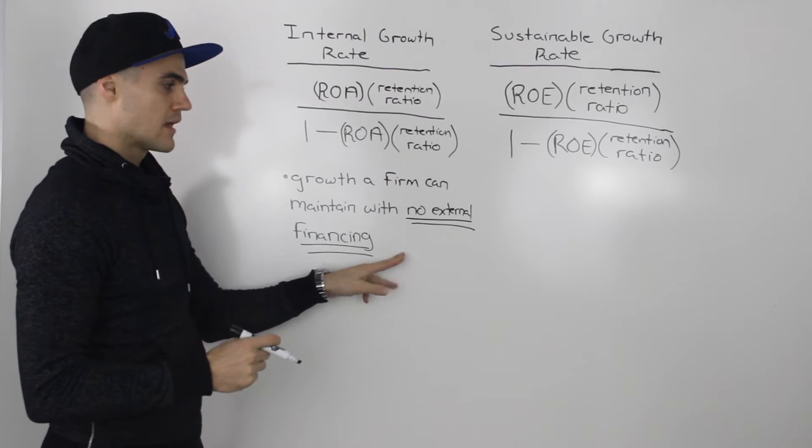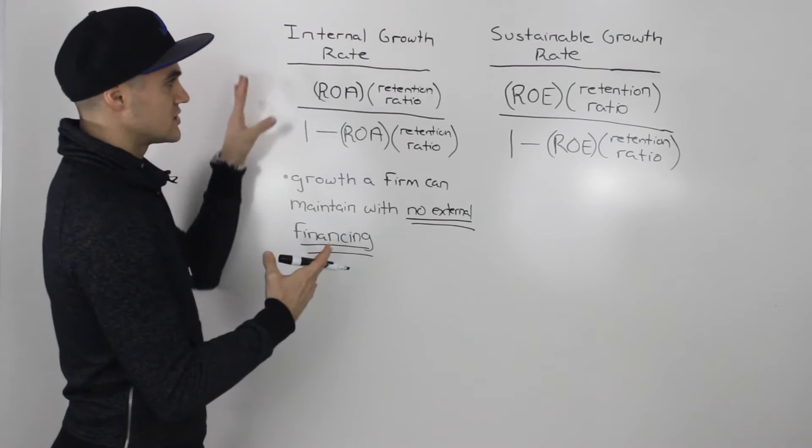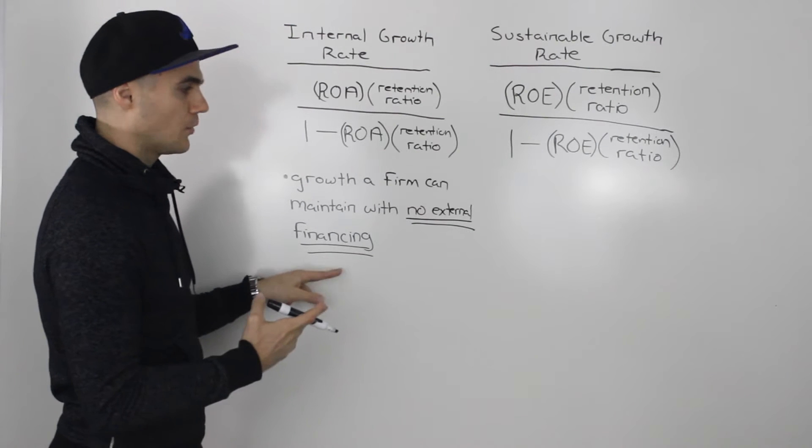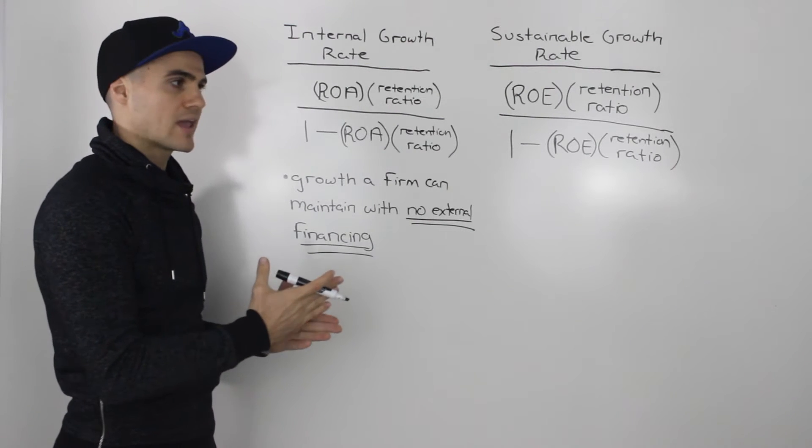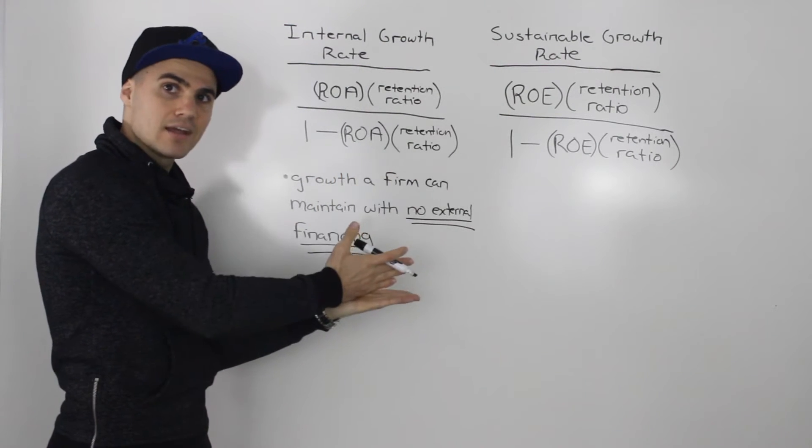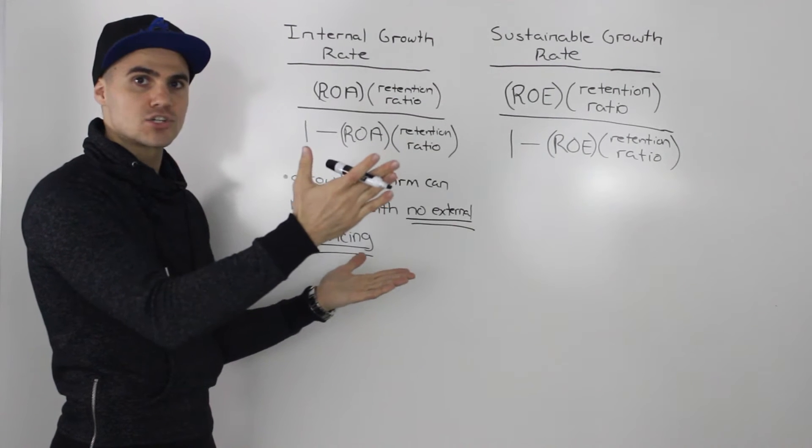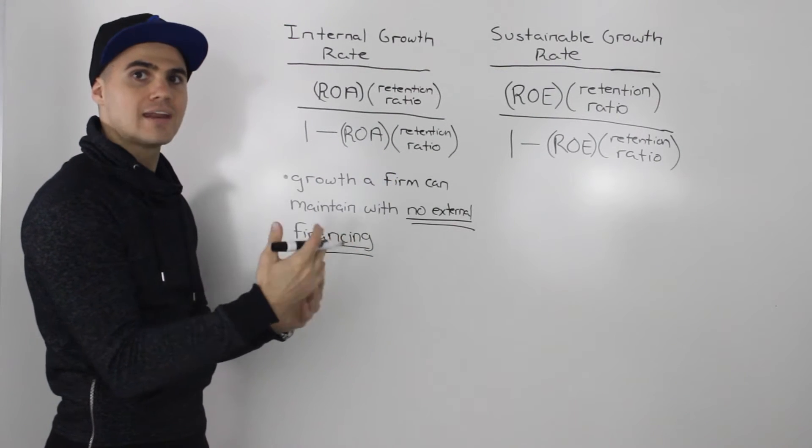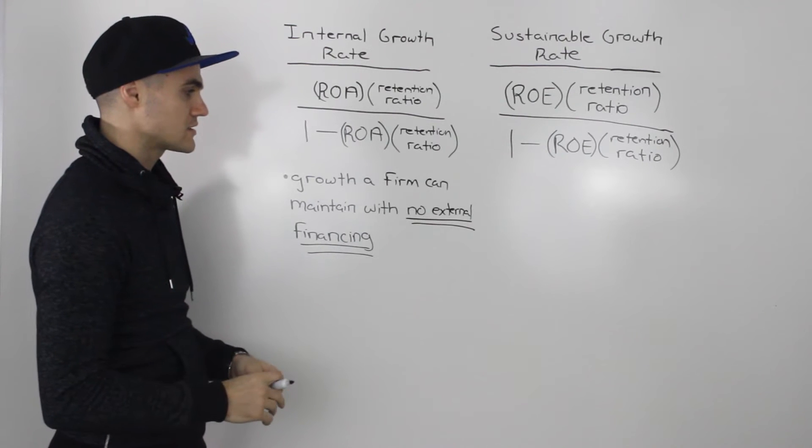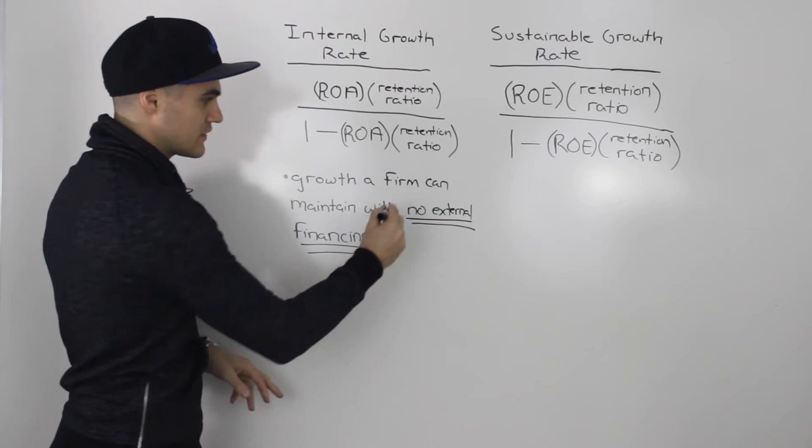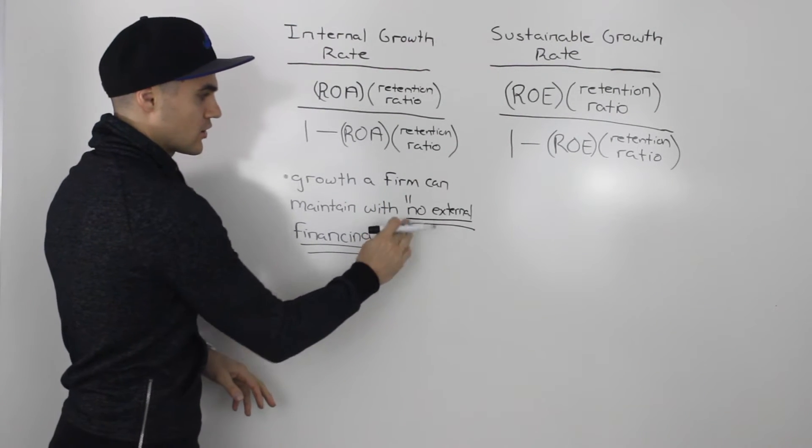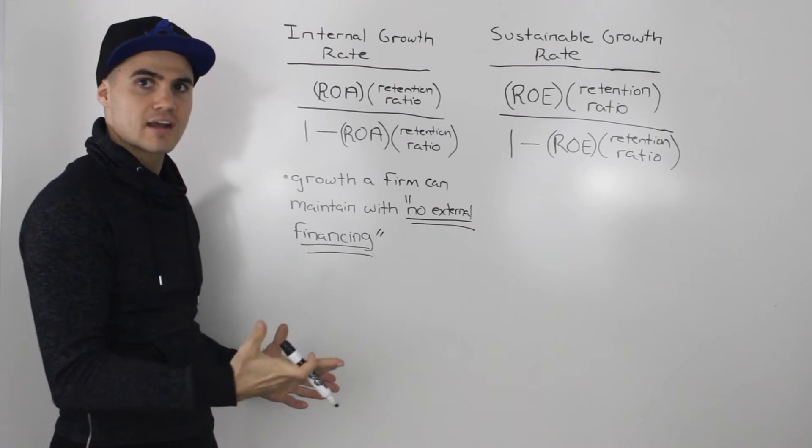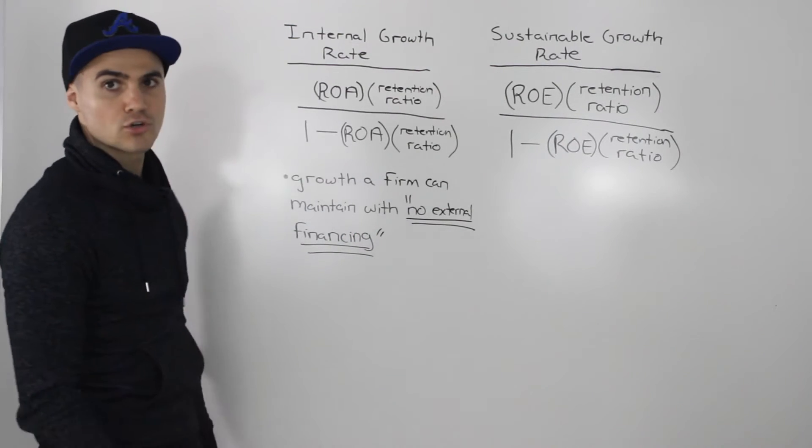Whenever they say that, then you know pretty much that you're dealing with the internal growth rate because no external financing means that you can't take on any additional debt and you can't take on any additional equity. Any increase in equity has to come from retained earnings. So look specifically for this phrase here, no external financing. When you see that in a question, you're dealing with the internal growth rate.